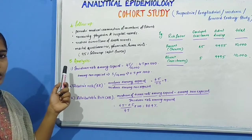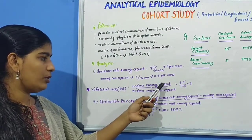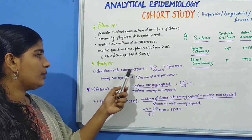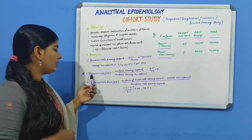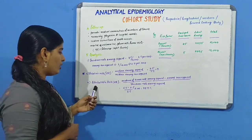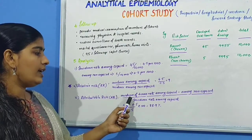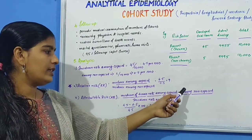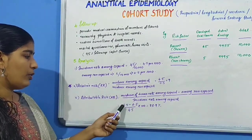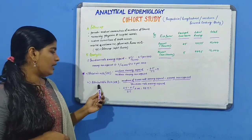Moving on to relative risk or risk ratio (RR) — it is the ratio of incidence of disease among the exposed population divided by the incidence among the non-exposed group. Substituting the values already calculated gives the RR. This ratio is a better index in assessing the etiological role of the factor in the disease. Attributable risk (AR), also referred to as risk difference, is calculated by finding the difference between incidence rates among exposed and non-exposed, then dividing by the incidence rate among the exposed. Substituting: 4.5 minus 0.5 divided by 4.5. Attributable risk finds more importance in public health programs.